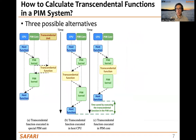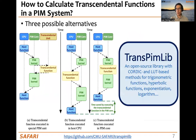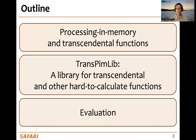Another alternative is to implement the transcendental functions in software and execute them in the PIM core. This way, we can save a significant amount of time from data movement between the PIM side and the CPU side. This is basically what we propose in TransPIMLib: an open-source library with CORDIC and LUT-based methods for trigonometric functions, hyperbolic functions, exponentiation, logarithm, etc.